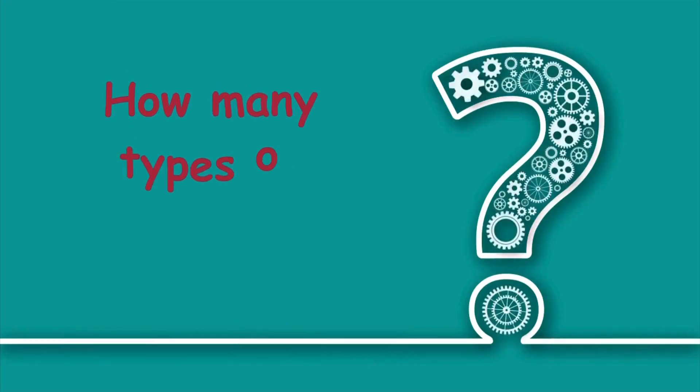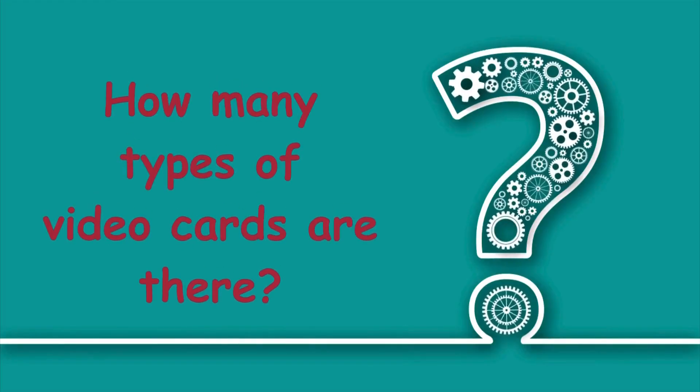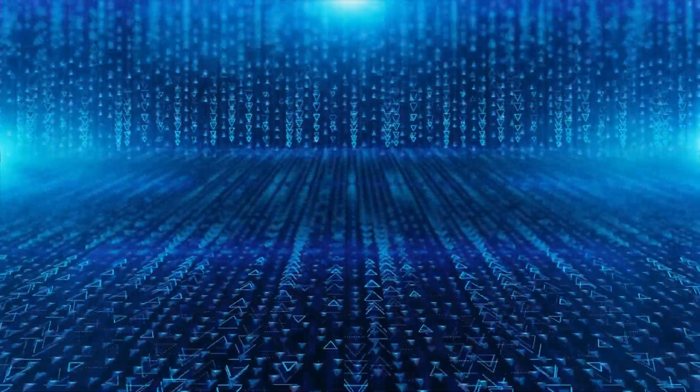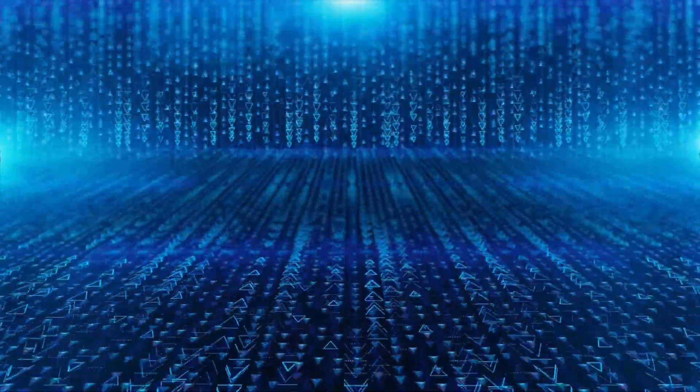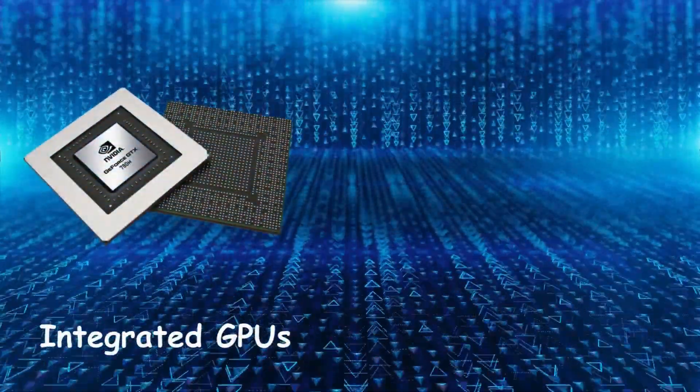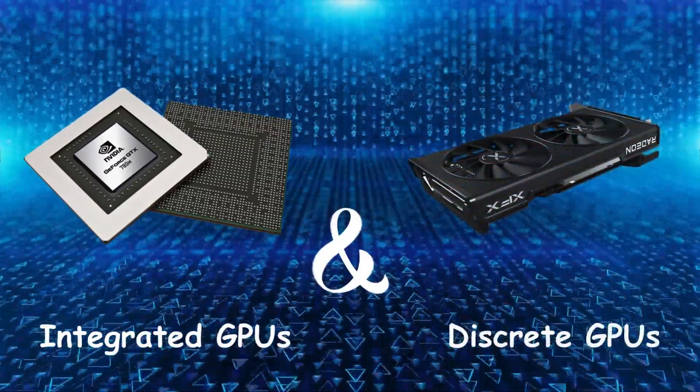Can you guess the correct answer? How many types of video cards are there? And the answer is there are two types of video cards, integrated GPUs, and discrete GPUs.